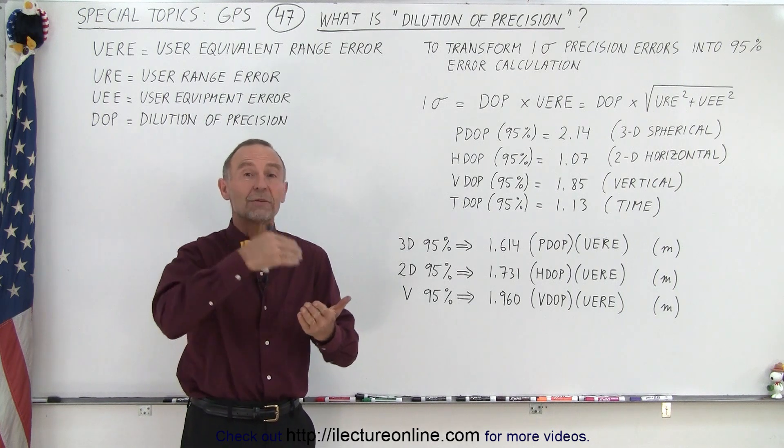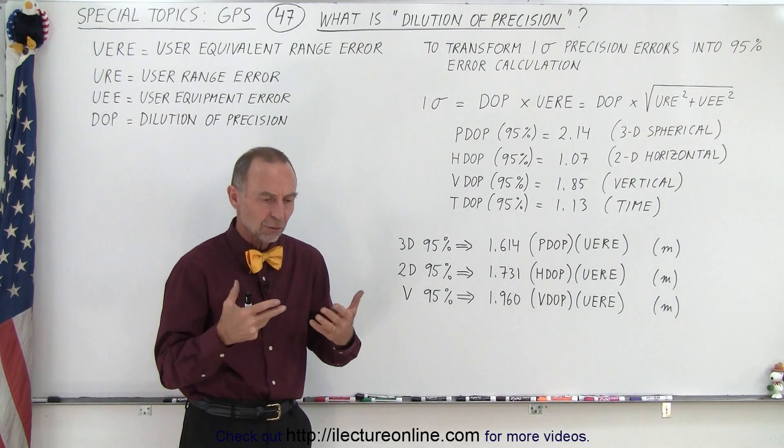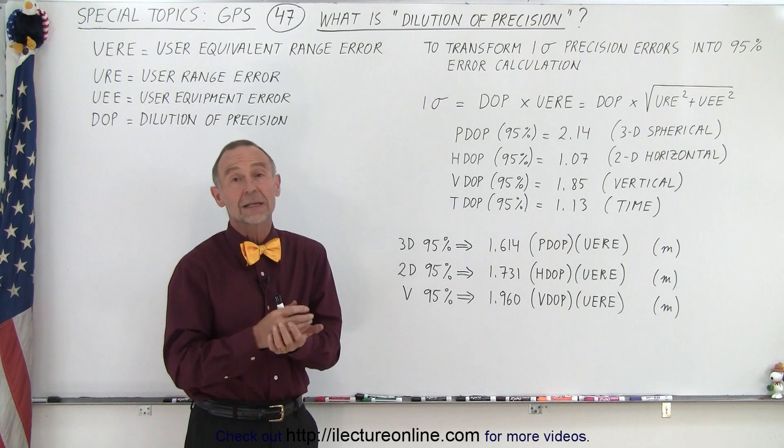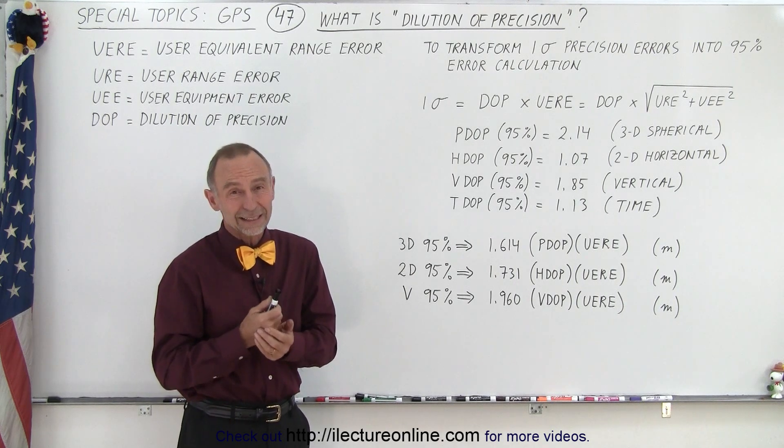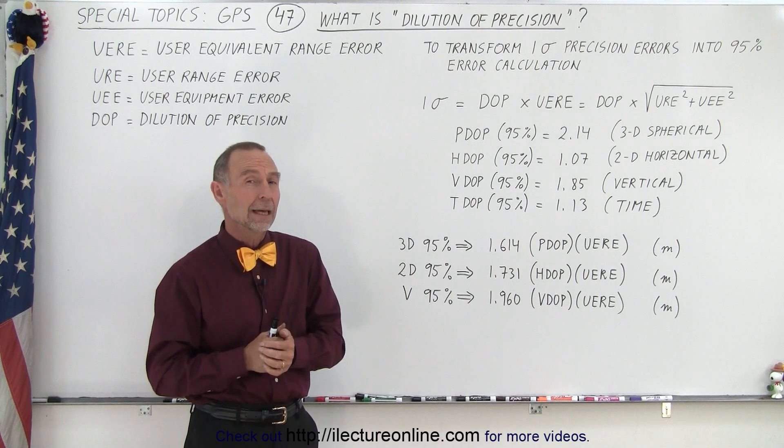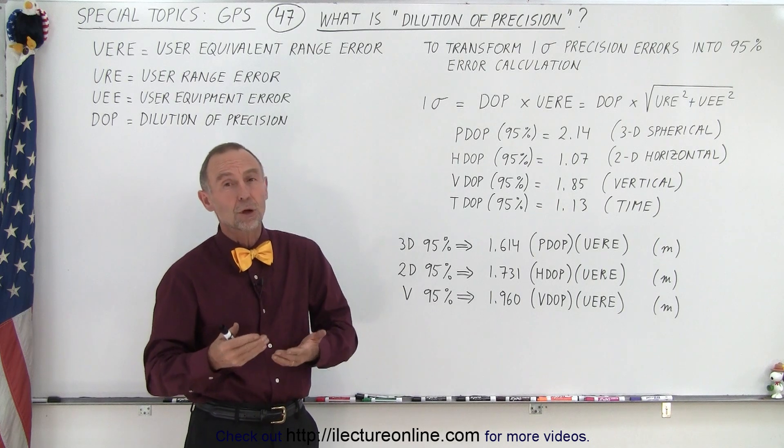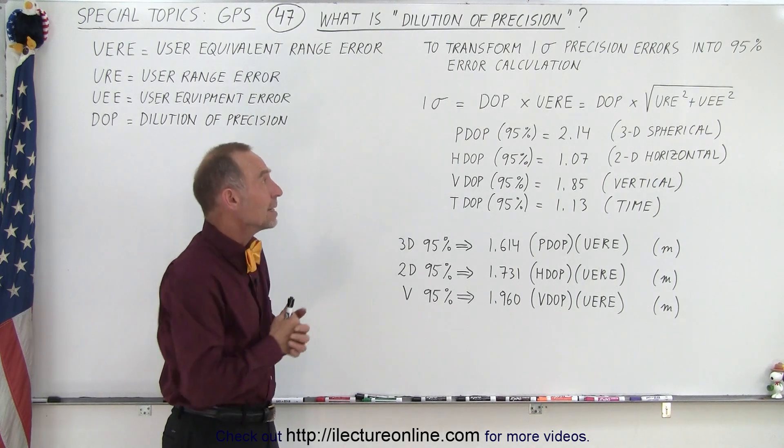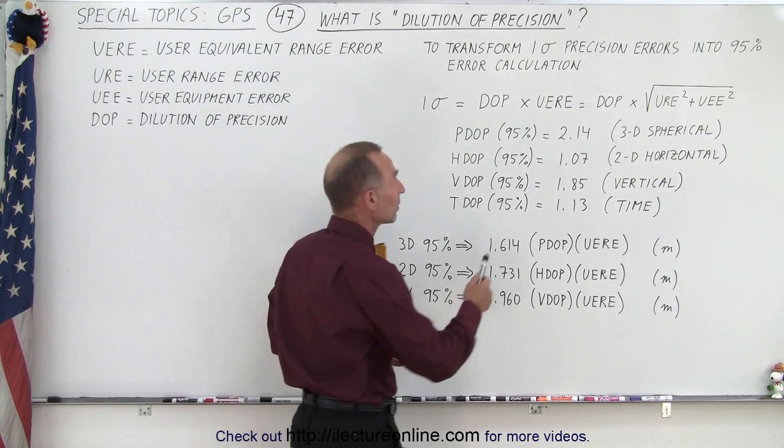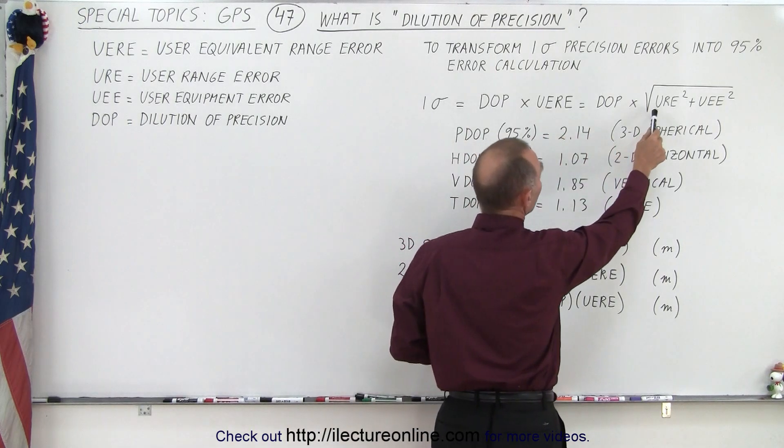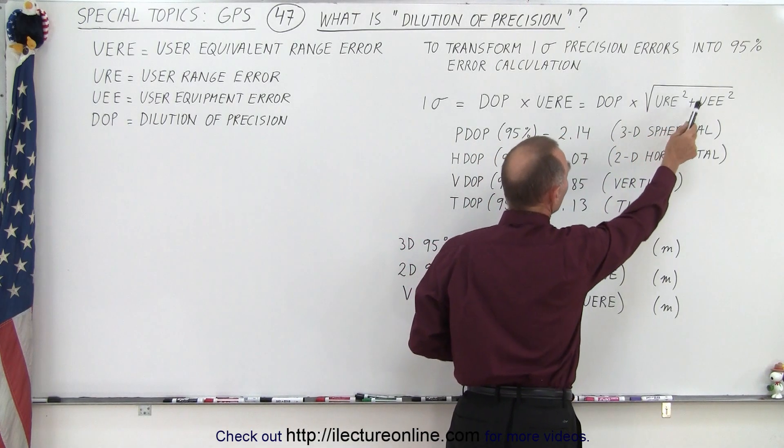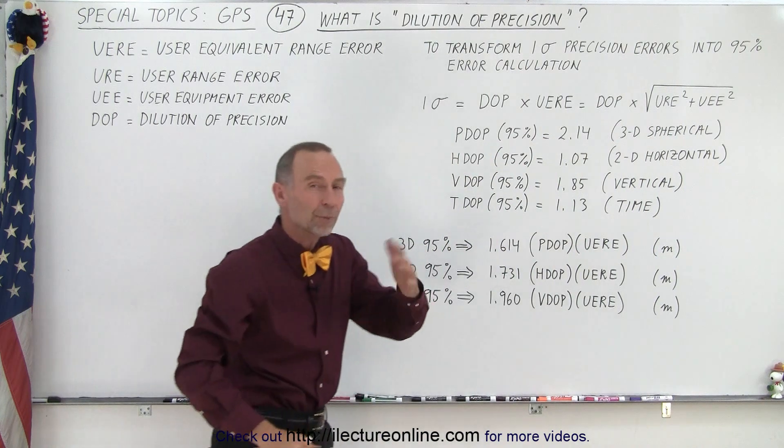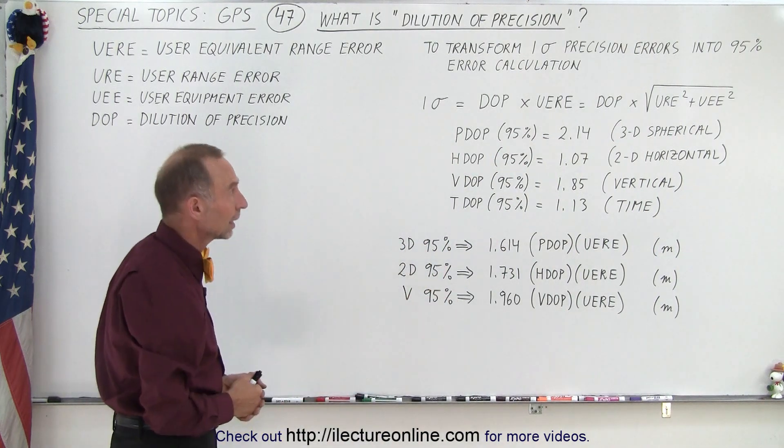And of course, we already saw in the previous video that those range measurement errors can be calculated in part by calculating the UERE. And the UERE is made up of the URE and the UEE. And we saw that already here, that the UERE is equal to the square root of URE squared plus UEE squared. And in the previous video, we showed you how those were calculated.